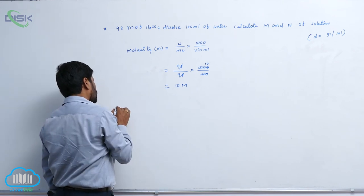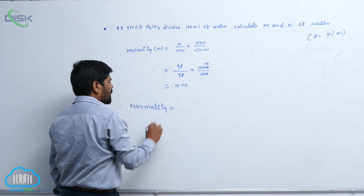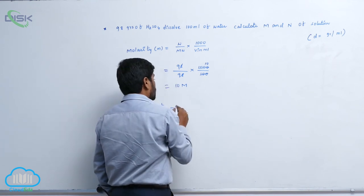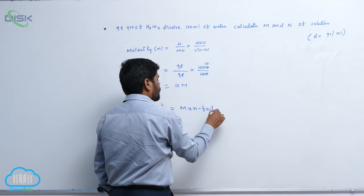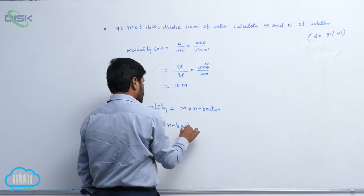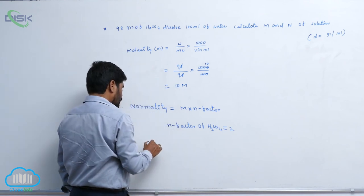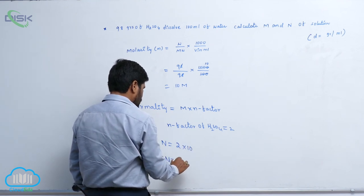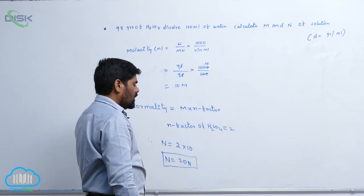Then normality equals molarity multiplied by n-factor. The basicity of sulfuric acid gives an n-factor of 2. So normality equals 2 multiplied by 10, which gives 20N — a 20 normal solution.